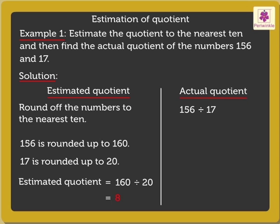To find the actual quotient, we divide 156 by 17 and get the quotient as 9. Thus, the actual quotient is 9.